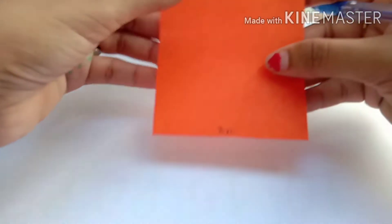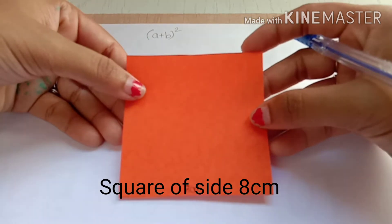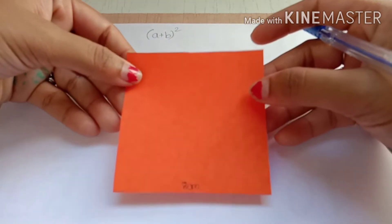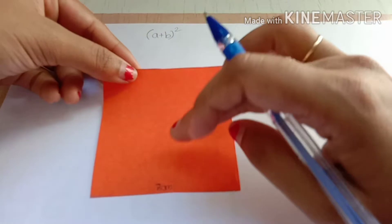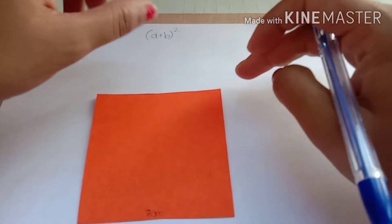For that, I am taking the value of a as 8 centimeters. To prove this identity, I need a square of the same side measurement as 8 centimeters. So I need a square of 8 centimeters, that is my a value.